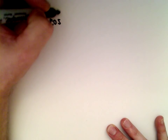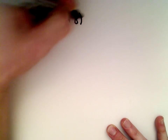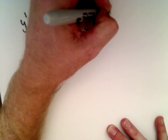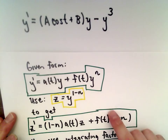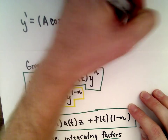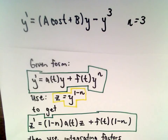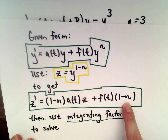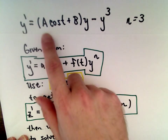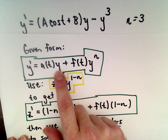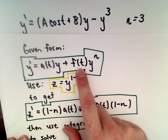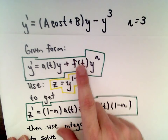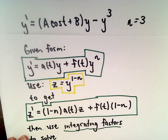We've got y prime equals a multiplied by cosine of t, plus b multiplied by y, minus y to the third power. Using our formulas, notice our power n is going to be 3. So a(t) — what's being multiplied by y — is a cosine of t plus b. And f(t) is negative 1, because that's what's sitting in front of y to the third power.